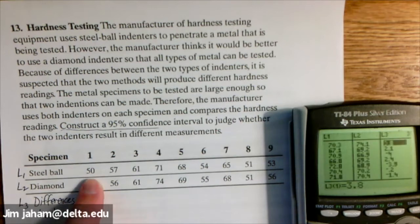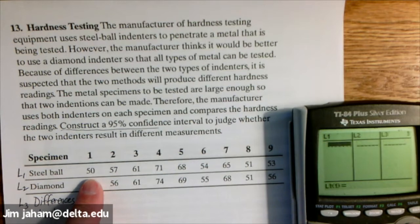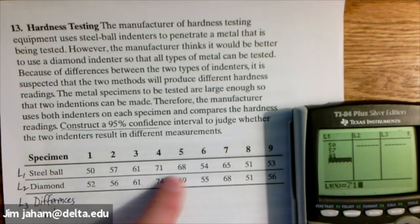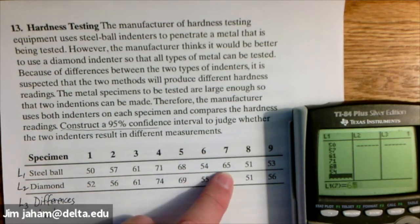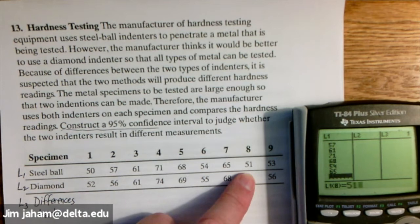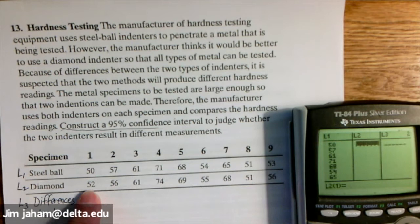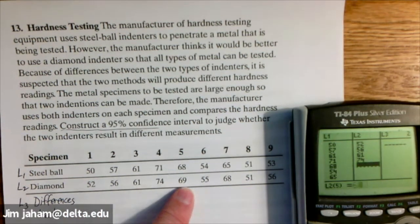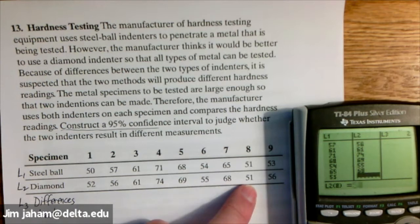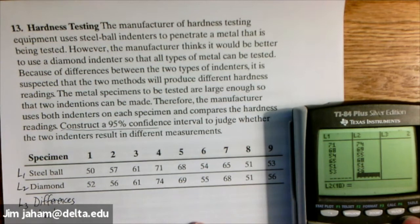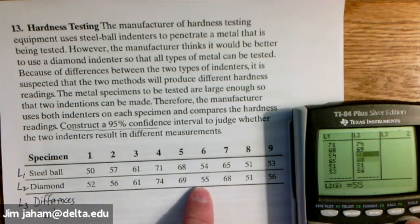So let's enter in our calculator the steel ball measures, the diamond measures, and then let's subtract L2 minus L1 to get the differences as we did before. Clear out your lists and enter in L1. So 50, 57, 61, 71. All of the problems from this section, you're going to be entering data. But usually the sample sizes are fairly small, so it's not going to take you a whole lot of time.